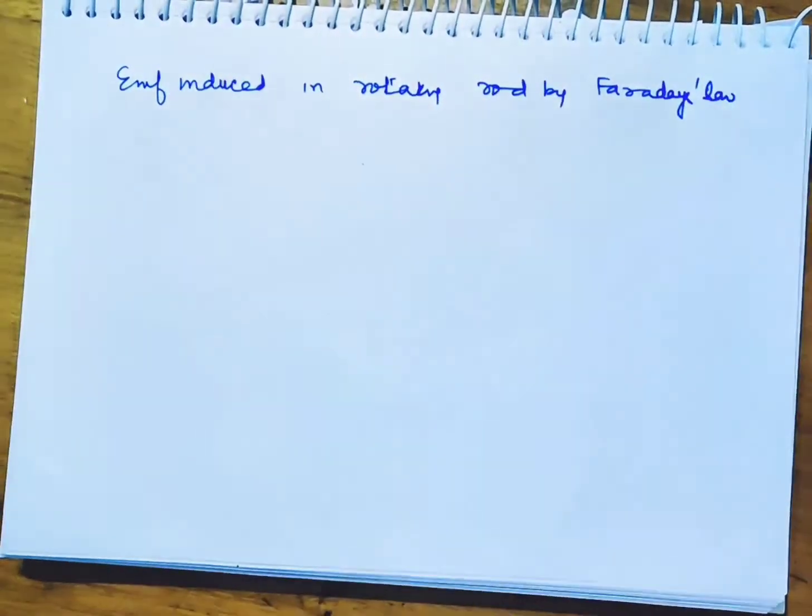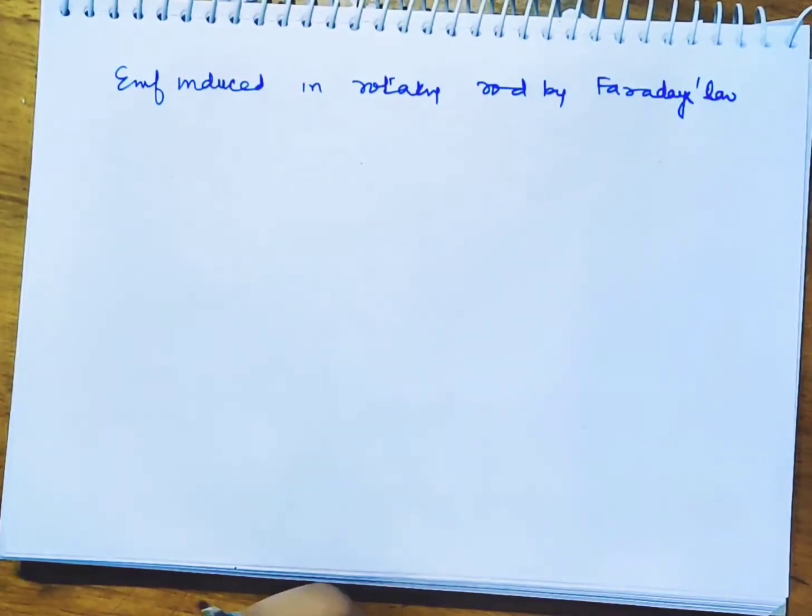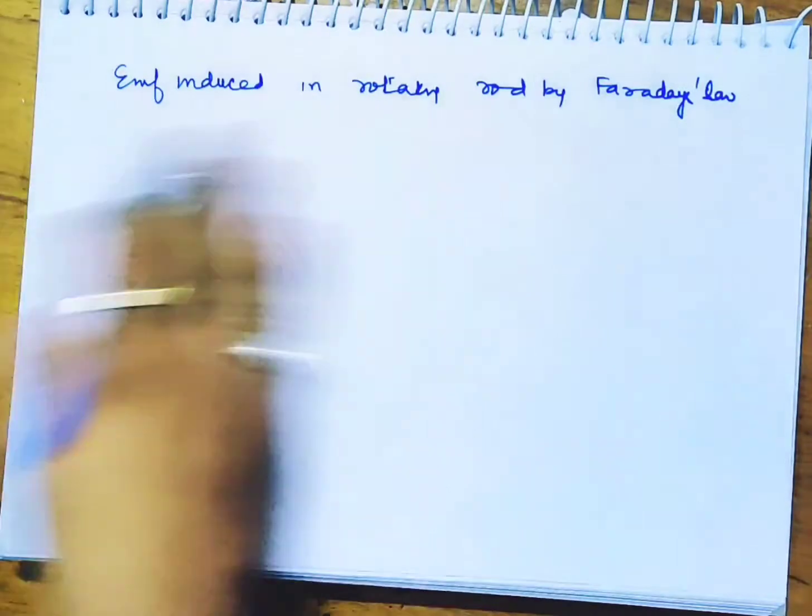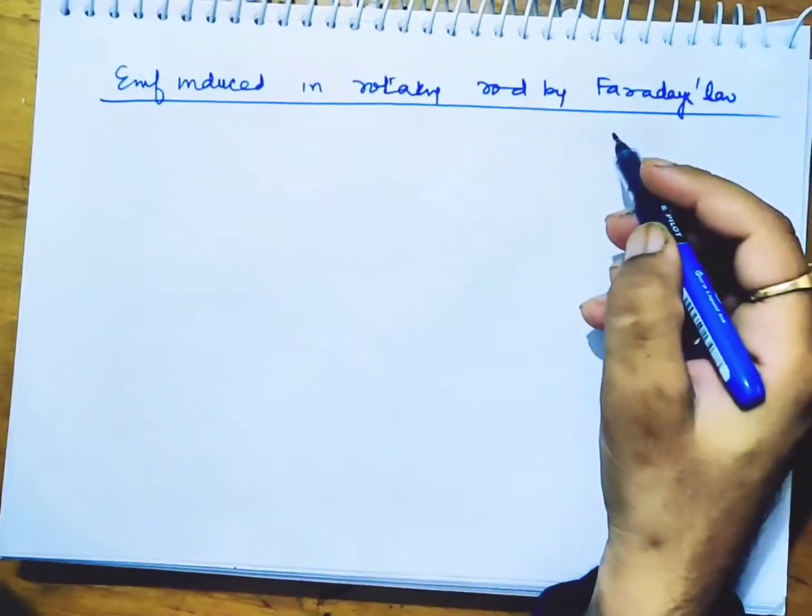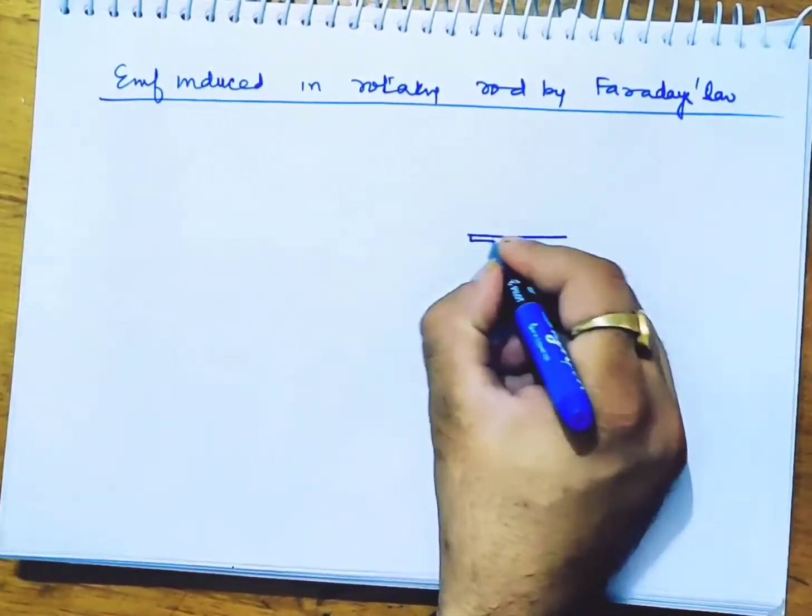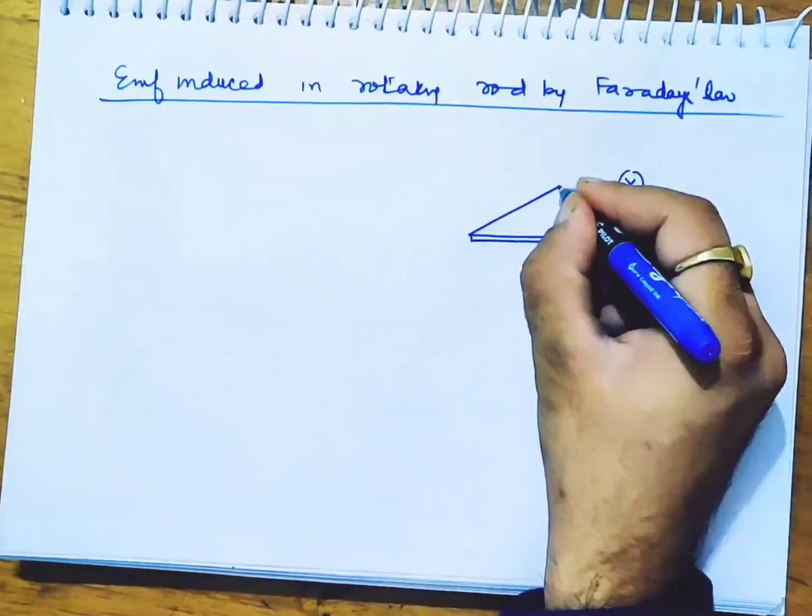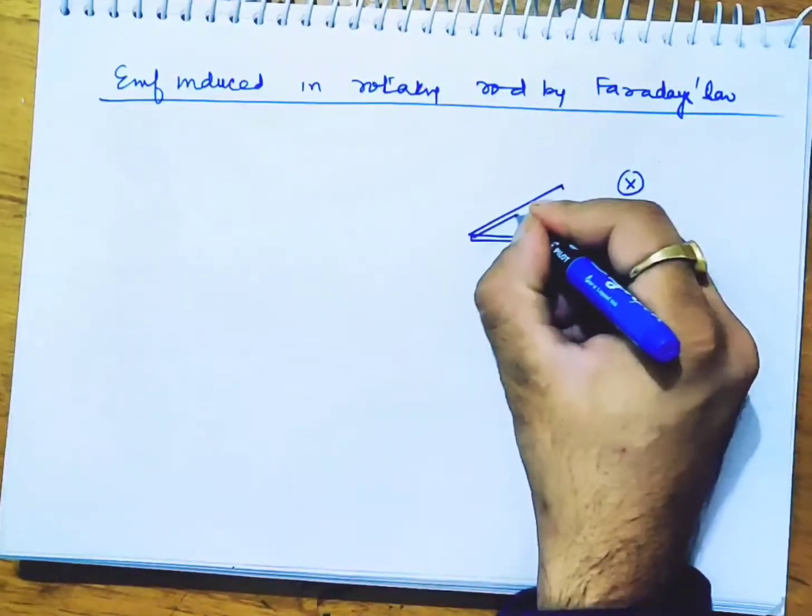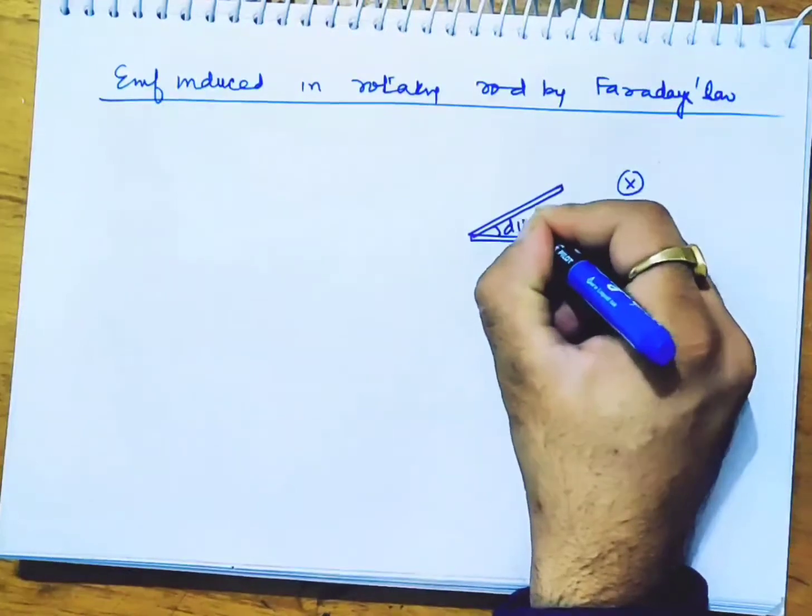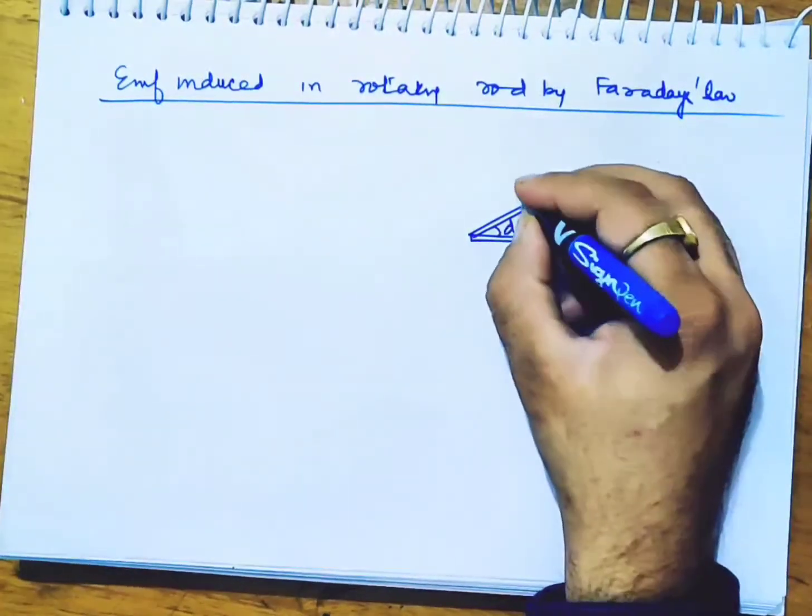Faraday's law, the second statement of d phi by dt, can solve this. The rod is in a cross magnetic field, and from a very small angle d theta it reaches omega speed.